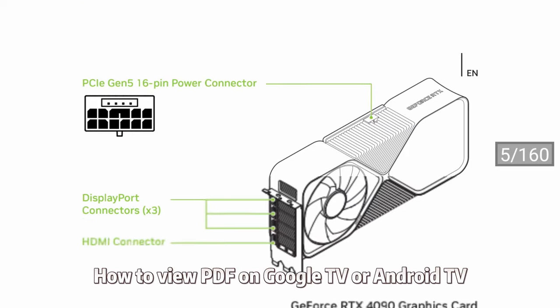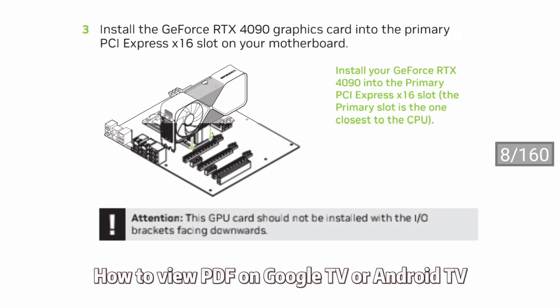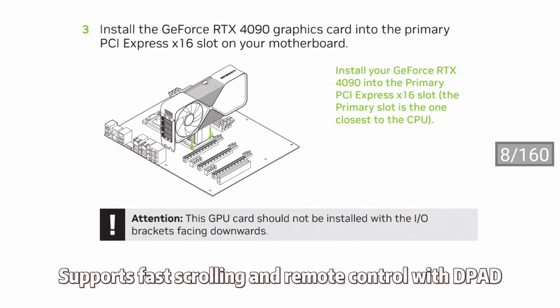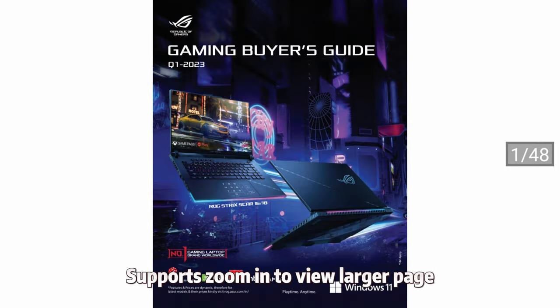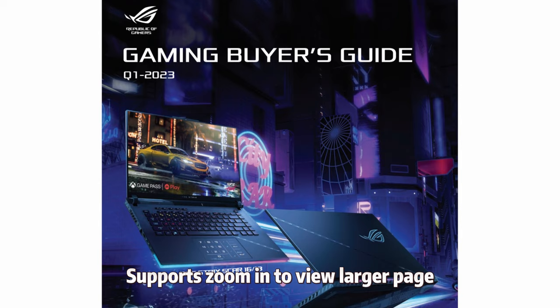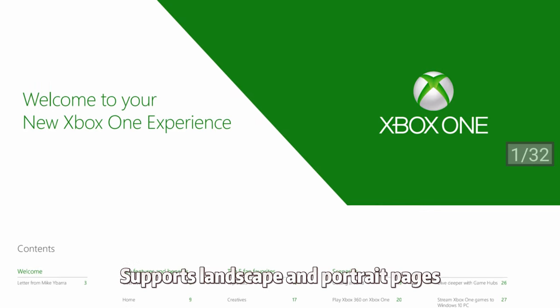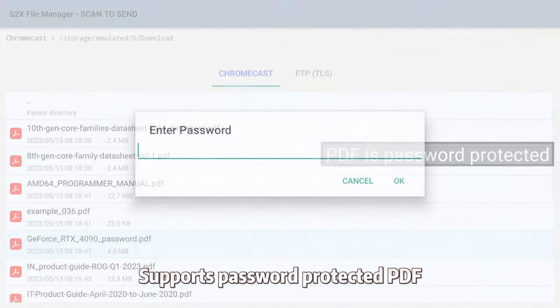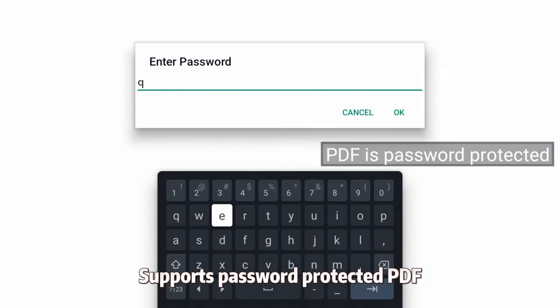How to view PDF on Google TV or Android TV. Supports fast scrolling and remote control with D-pad. Supports zoom in to view larger page. Supports landscape and portrait pages. Supports password protected PDF.